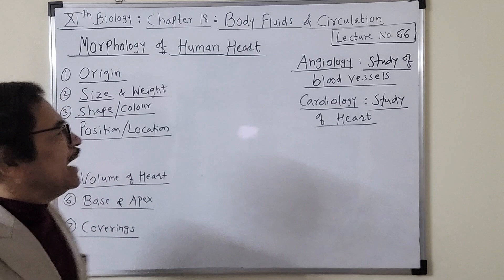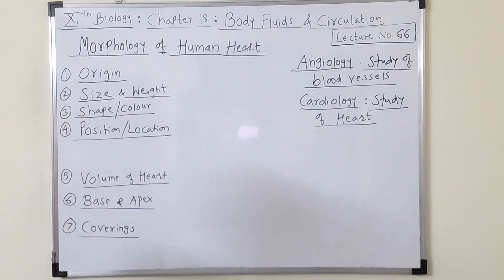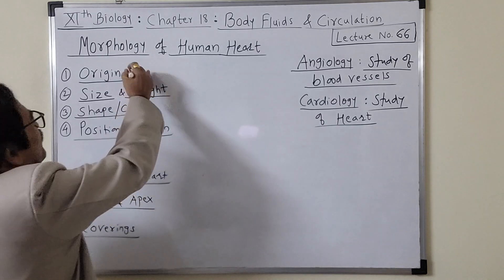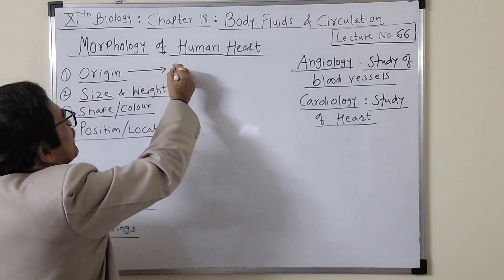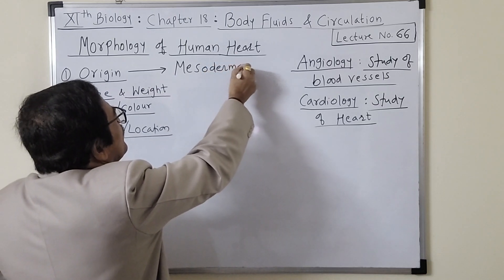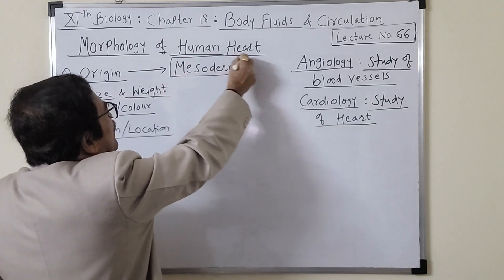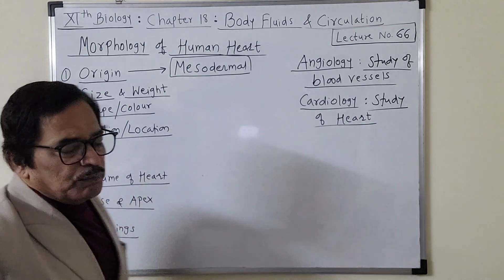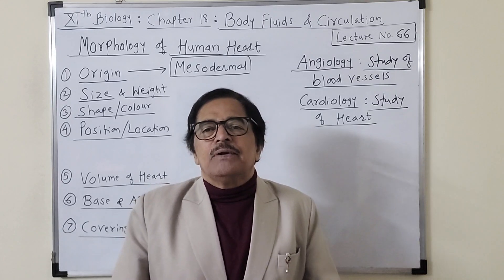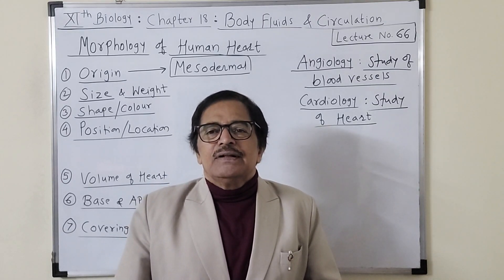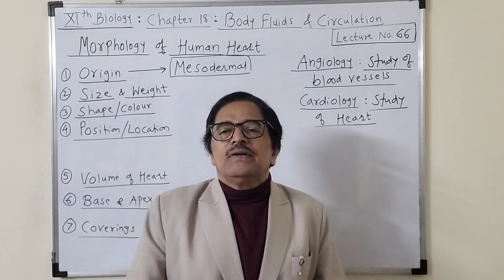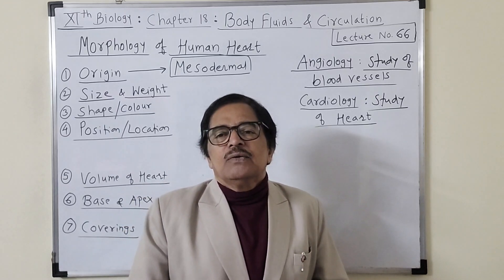Now about the human heart, let me explain in simple points. The origin of the human heart is mesodermal — it is formed from the mesoderm layer of the embryo. This is an important MCQ point: the heart is originated from the mesoderm layer.